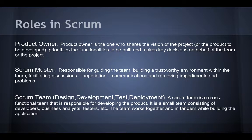Now let's talk about the different roles in Scrum and how they are defined. The easiest and most common way to mess up Scrum is to assign certain roles to certain people in an organization. For example, a manager should never be a scrum master. Let's divide these into the roles and understand what they should be responsible for. Product Owner: the one who shares the vision of the product, prioritizes the features to be built, and makes key decisions on behalf of the team or the project. The Scrum Master is responsible for guiding the team, building a trustworthy environment, facilitating decisions, negotiating, communicating, and removing impediments and problems. The Scrum team is a cross-functional team responsible for developing the product — a small team consisting of developers, business analysts, testers, etc. — that works together in tandem while building the application.